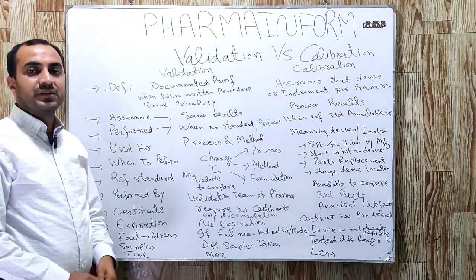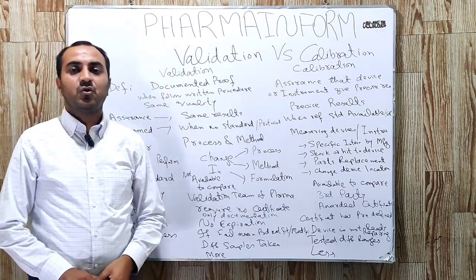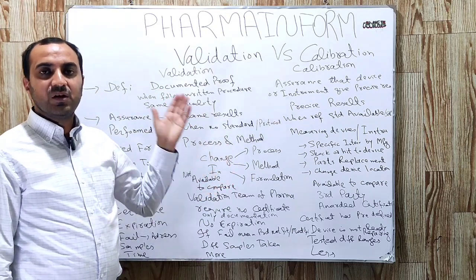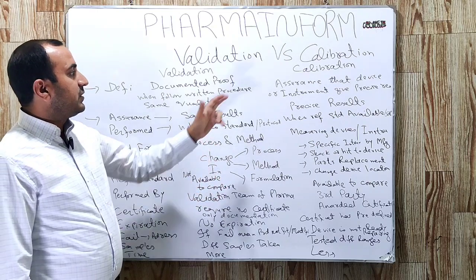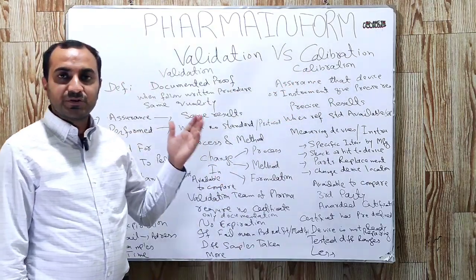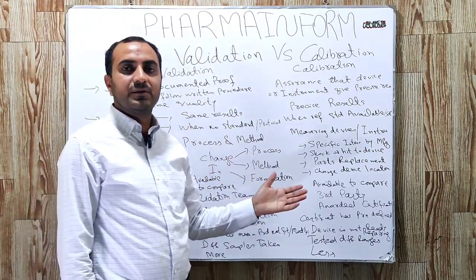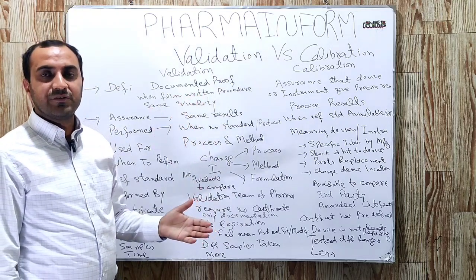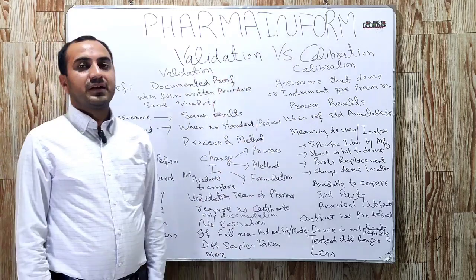Examples of validation are process validation, cleaning validation, software validation, and personnel validation. Examples of calibration are pressure measuring device calibration, temperature measuring device calibration, and analytical results recording device or instrument calibration.